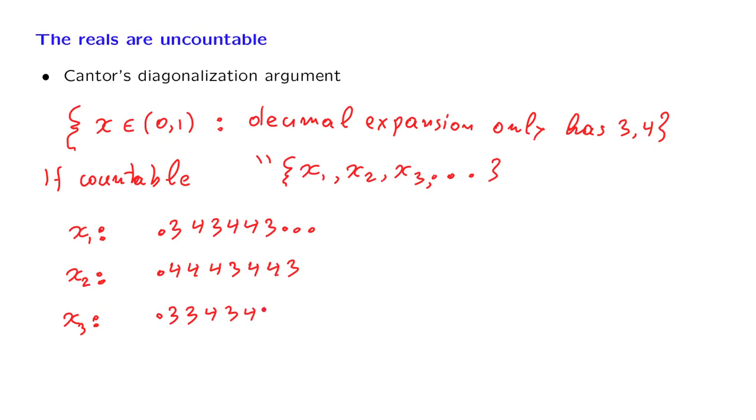So we have assumed that our set is countable, and therefore the set is equal to that sequence. So this sequence exhausts all the numbers in that set.